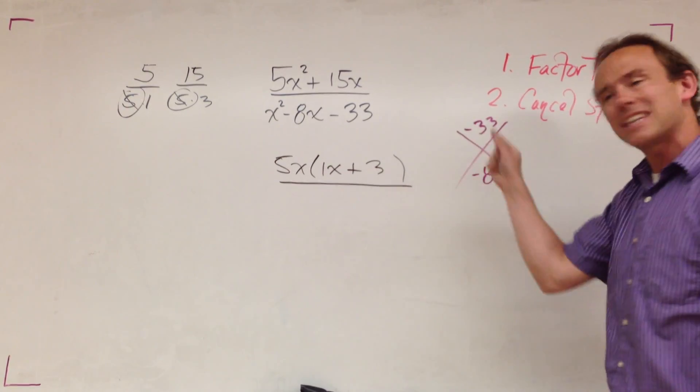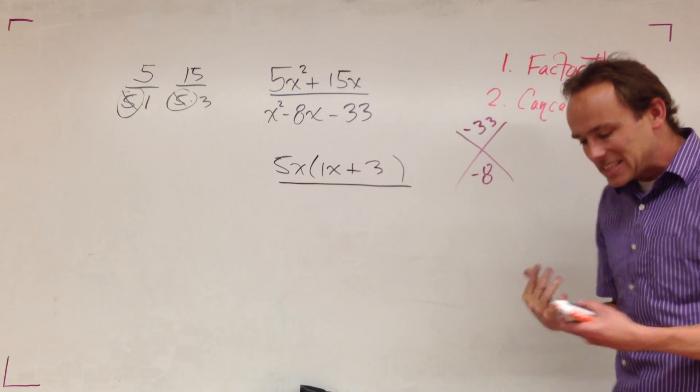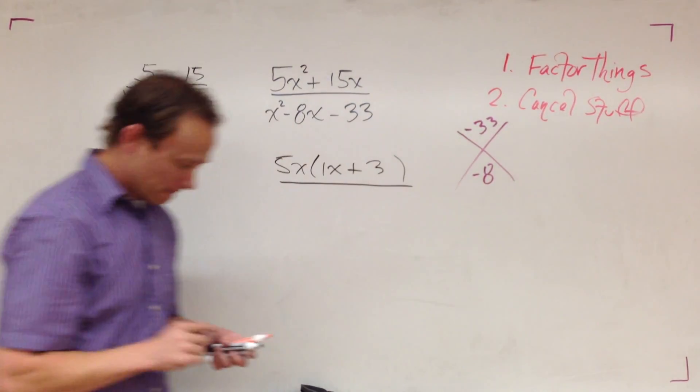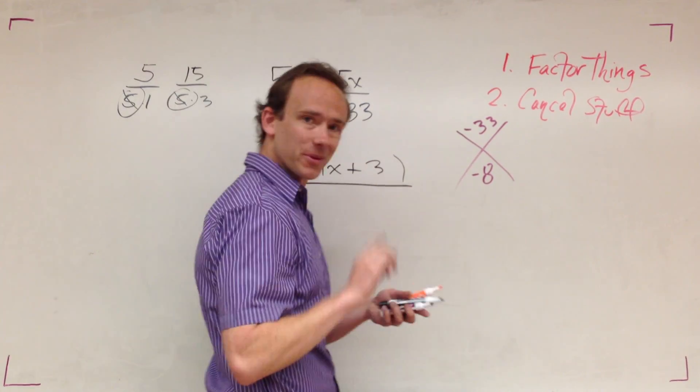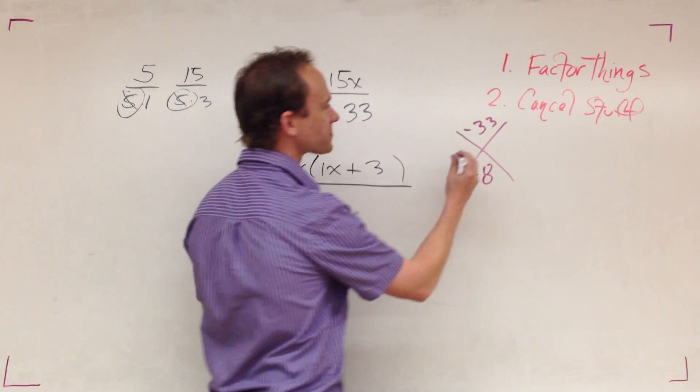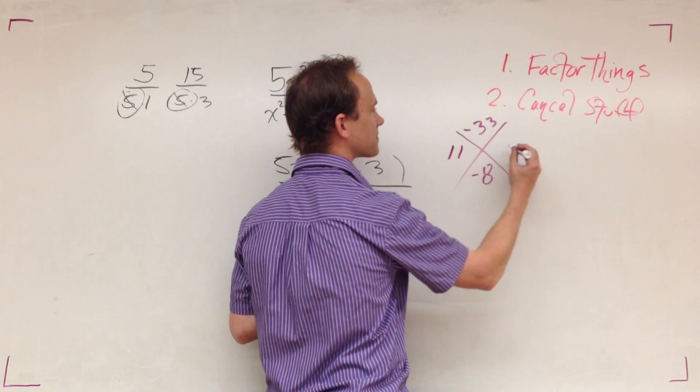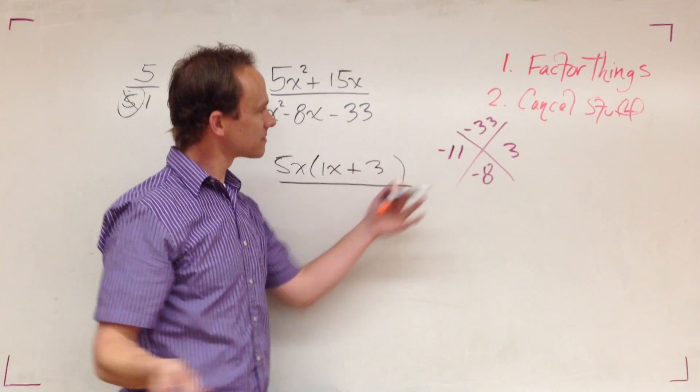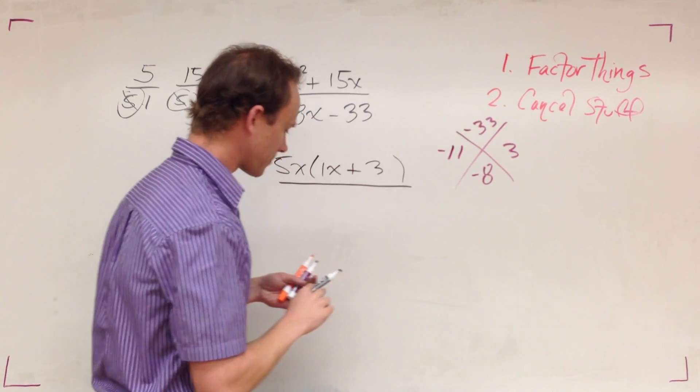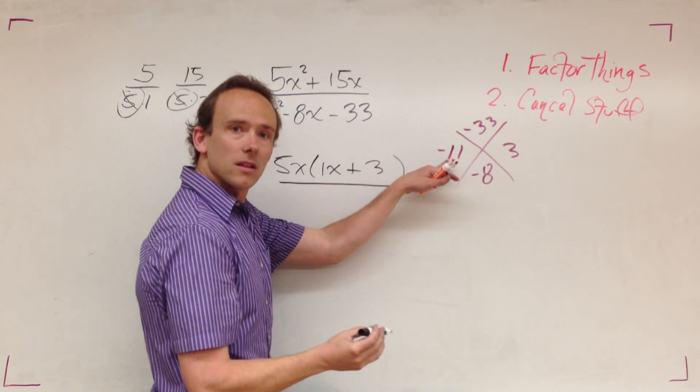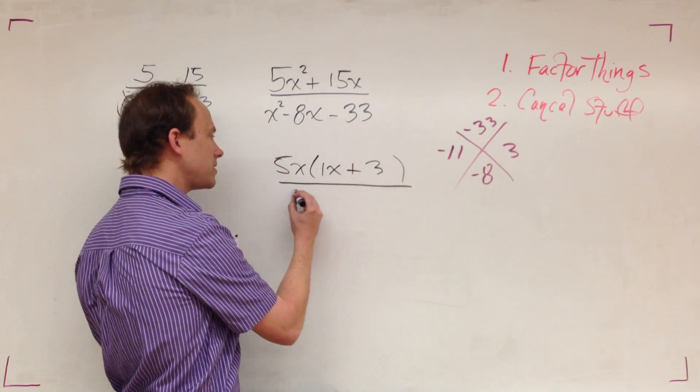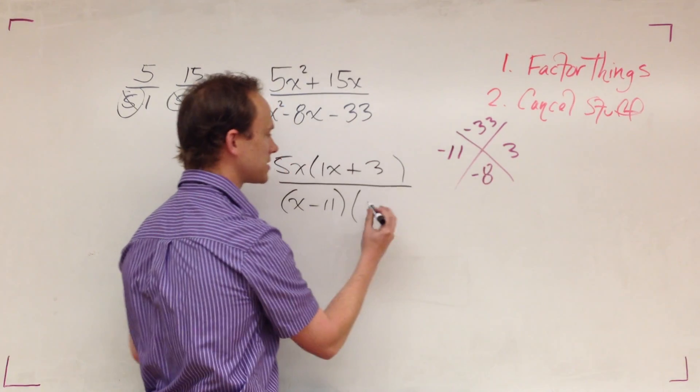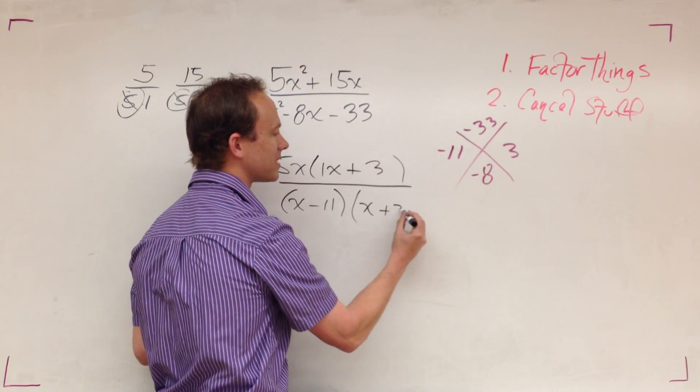I need two numbers that multiply to give me negative 33 but add to give me negative 8. That's the puzzle. This is minus 11, so down here we have x minus 11. Right here that's a positive 3, we have x plus 3.